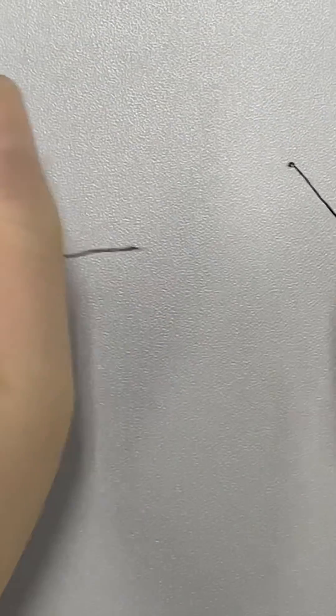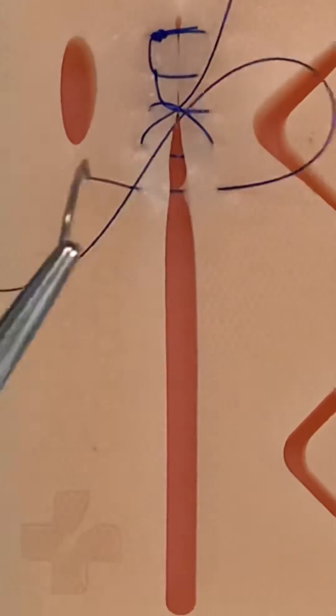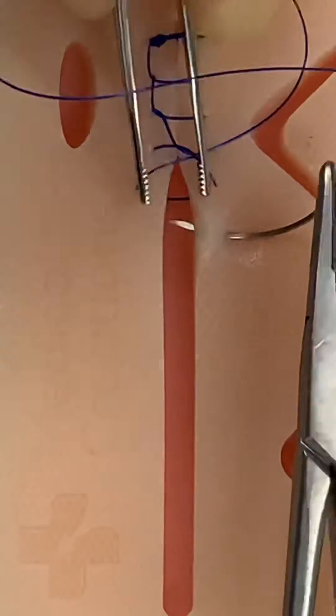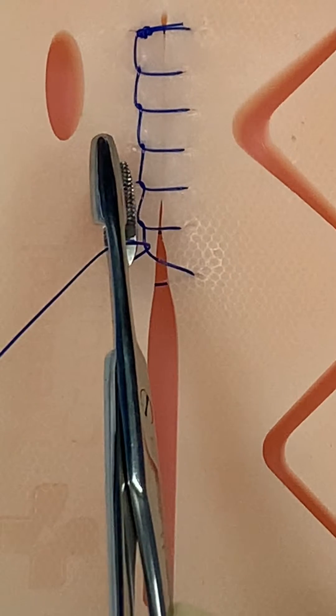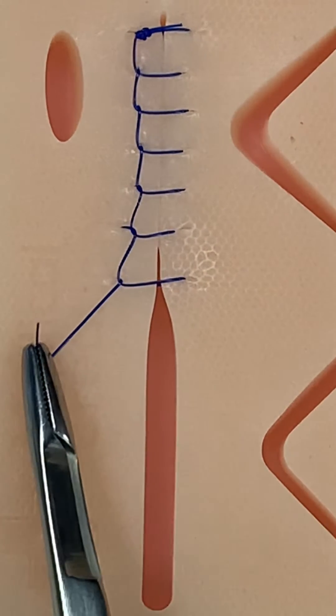This also commonly happens when trying to over tighten your knots, or when using these Olsen-Hagar needle holders, which are needle holders that have scissors built into them. Sometimes when you try to grab the suture, you end up grabbing it with the scissor portion and end up cutting it.